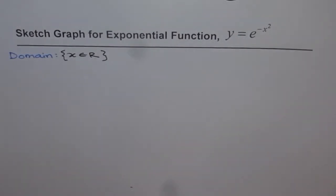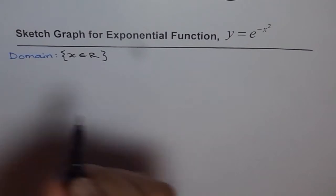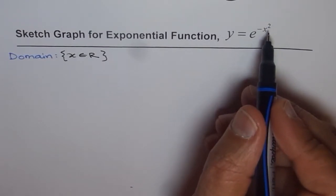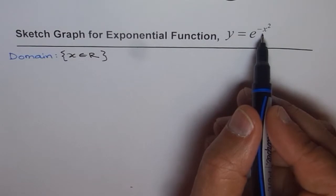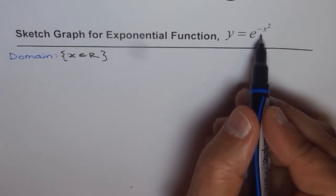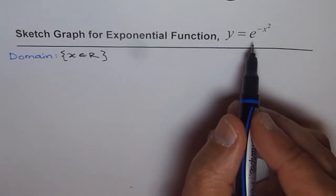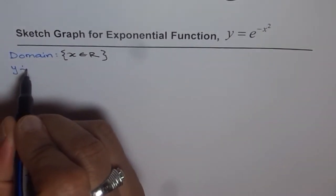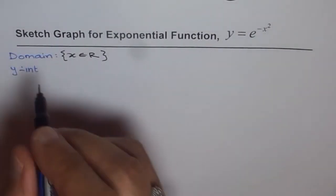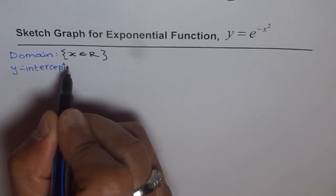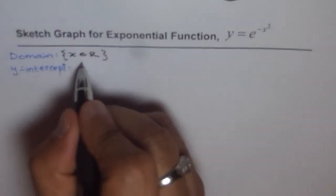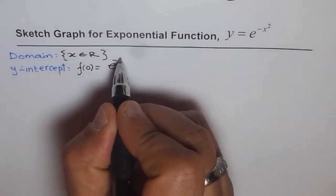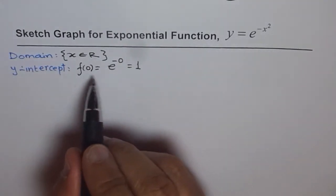Now we can look into intercepts. Will it have any x-intercepts? It won't have any x-intercepts since this is an exponential function. As x approaches infinity, the function may approach zero, but it will never be zero, so it will never have an x-intercept. But we'll definitely have a y-intercept. The y-intercept is at x equals zero. If we plug in zero, f of zero equals e to the power of zero, and anything to the power of zero is just one. So the y-intercept is at (0, 1).